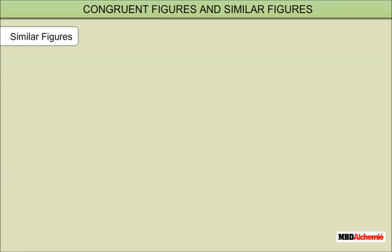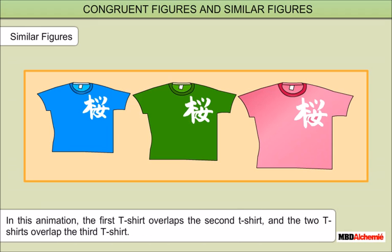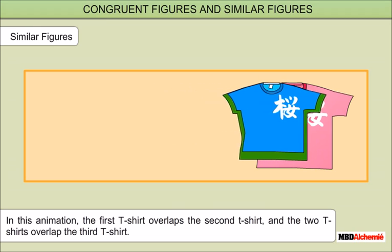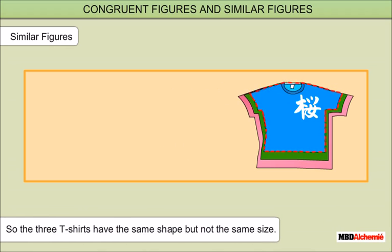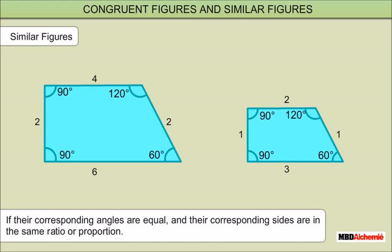Similar figures: Figures with the same shape but not necessarily the same size are called similar figures. In this animation, the first t-shirt overlaps the second t-shirt and the two t-shirts overlap the third t-shirt, so the three t-shirts have the same shape but not the same size. Two polygons with the same number of sides are similar if their corresponding angles are equal and their corresponding sides are in the same ratio or proportion.